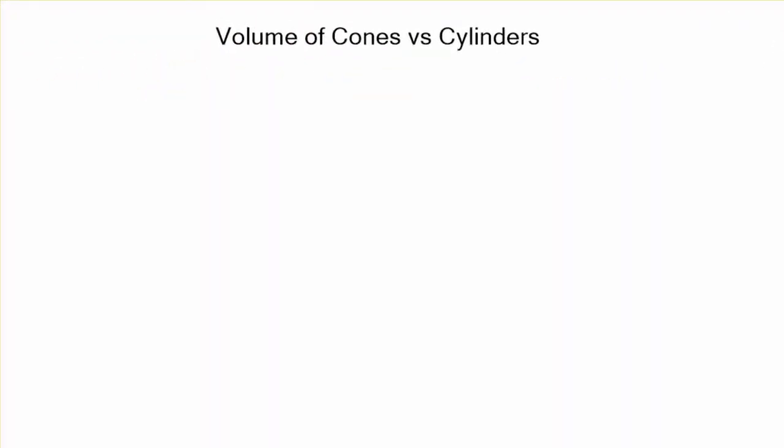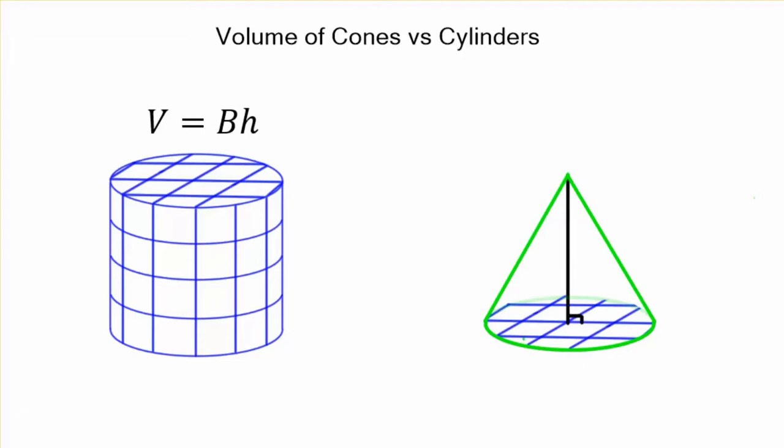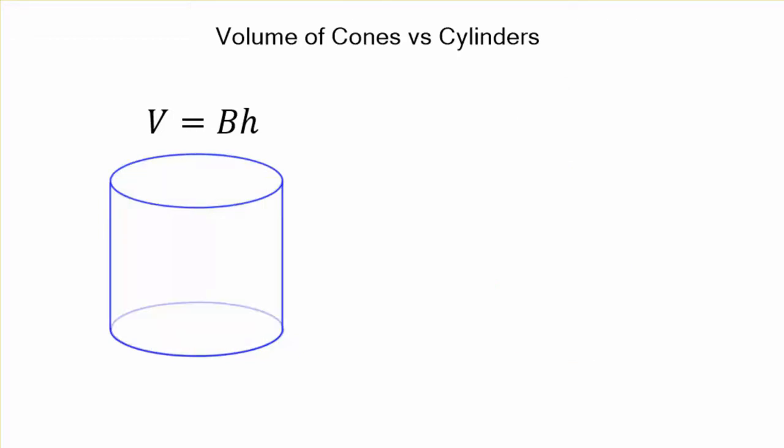This video is going to be about the relationship between the volume of a cone and a cylinder. Now a cylinder, its volume is going to be the base times the height. And the volume of a cone is going to be one-third of its base times height. That's the main idea.